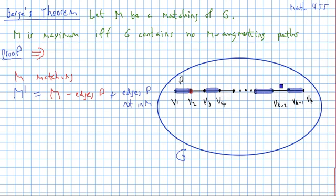So again, because the path is odd, when we take these other edges, we're going to get one more edge than before. So m' is going to have one more edge than m, and m' is also a matching.